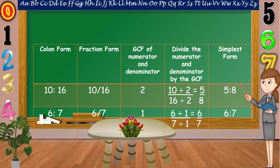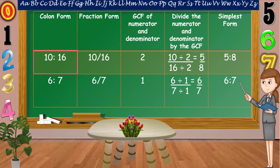Next example: 10 is to 16, or 10 over 16. The GCF of the numerator and denominator is equal to 2. So, let's divide the numerator and denominator by the GCF. 10 divided by 2 is equal to 5. 16 divided by 2 is equal to 8. Therefore, 10 is to 16 in simplest form is 5 is to 8.